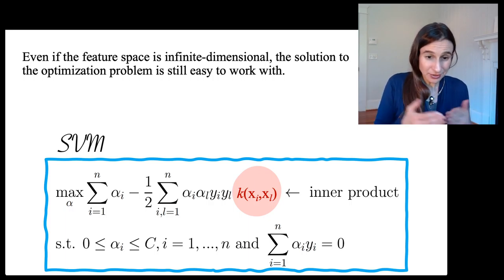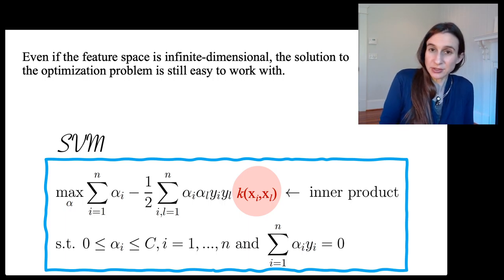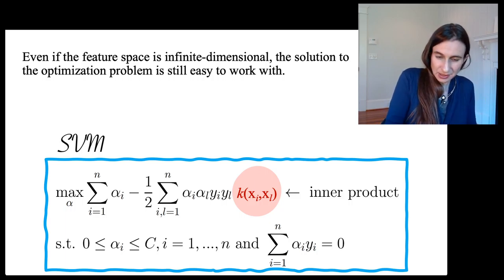No matter what kernel you put in there, even if you're working in infinite dimensional spaces, you just put the kernel values in and the alpha_i's come out, and there are still n of them.